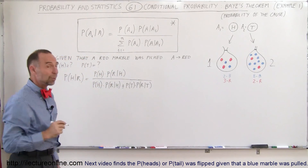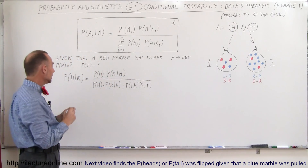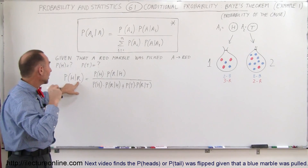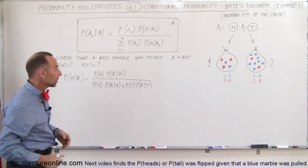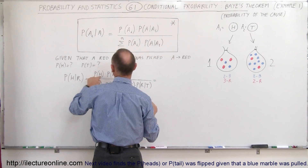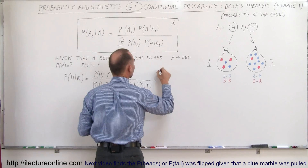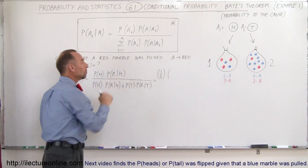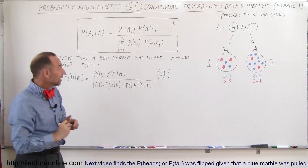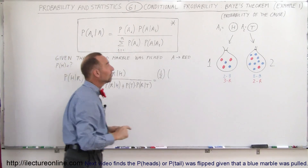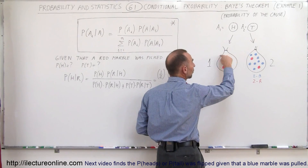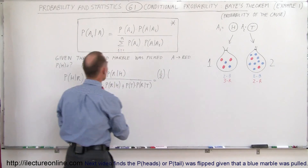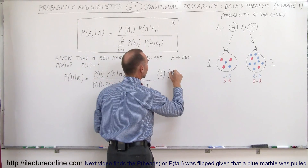Now we're ready to plug in some numbers. What is the probability of tossing heads given we pulled a red marble? The probability of getting heads is one out of two, because the coin only has two sides, times the probability that we pulled a red marble provided we had heads. If we had heads, there are three red marbles out of a total of five marbles, so that's three out of five.